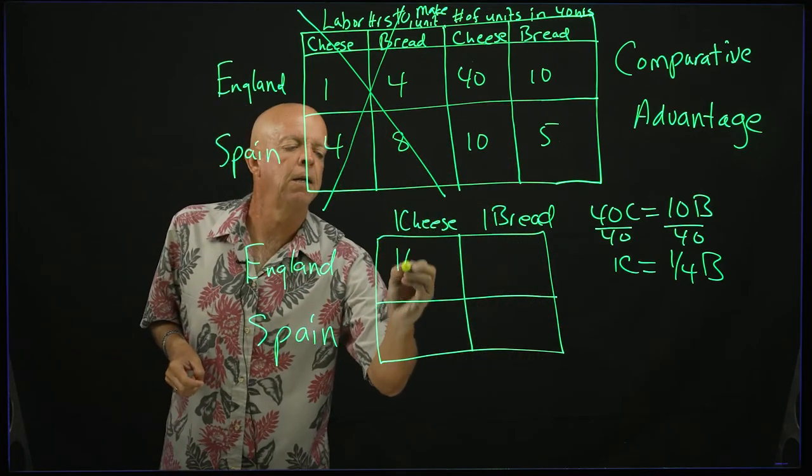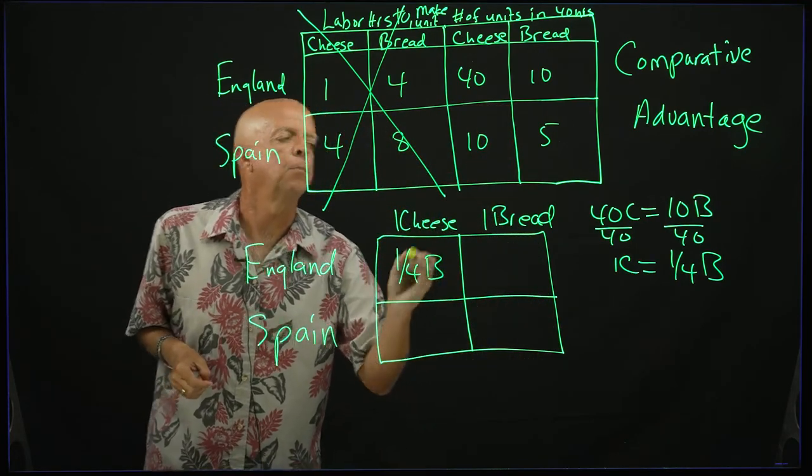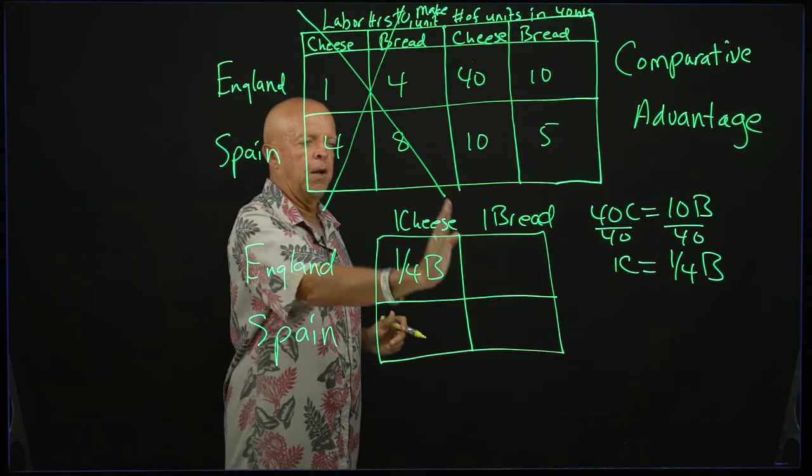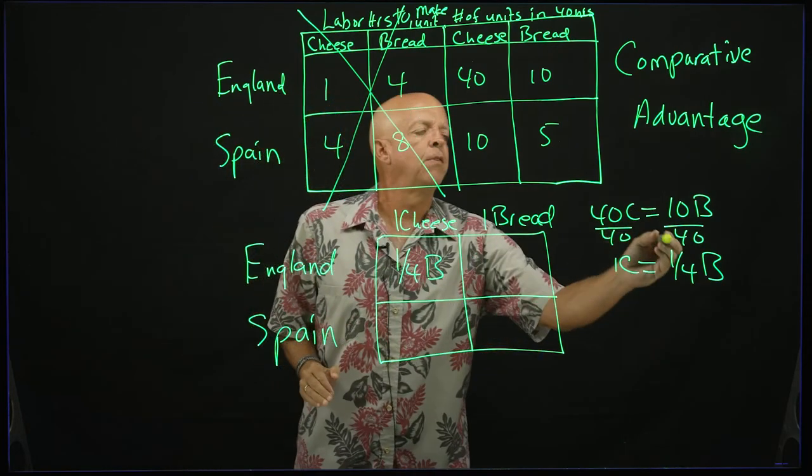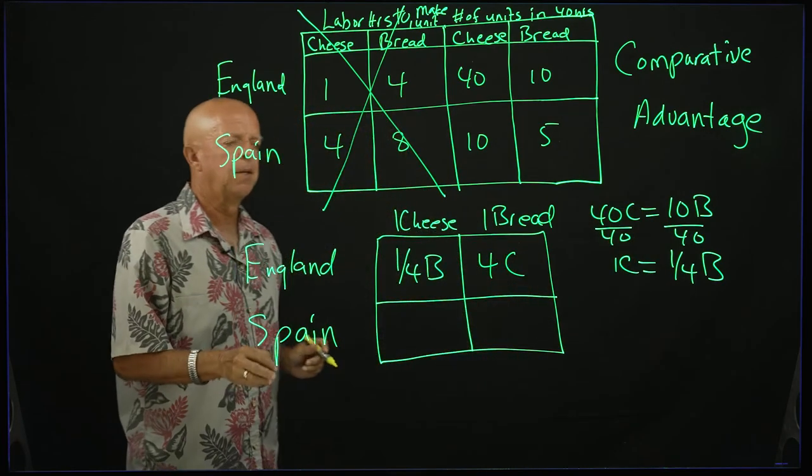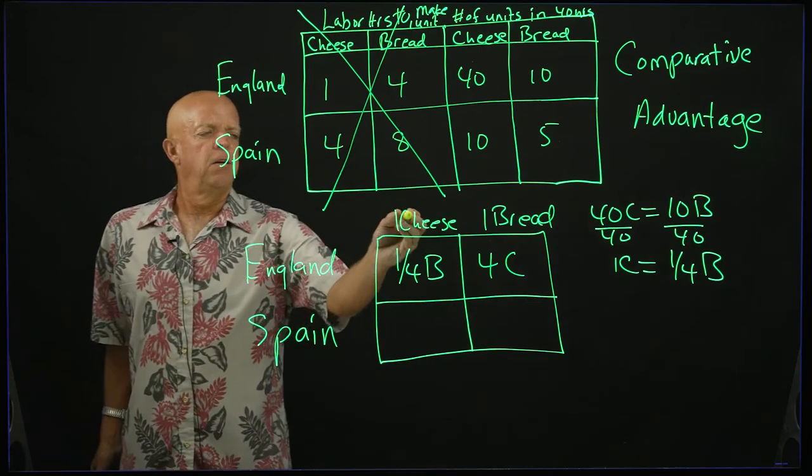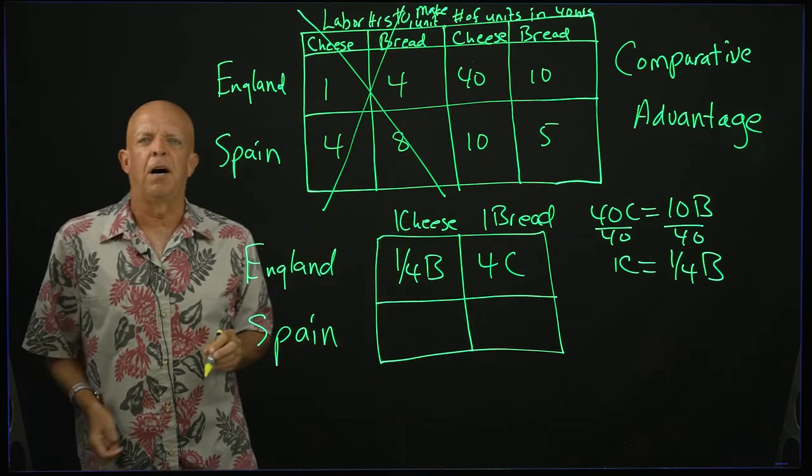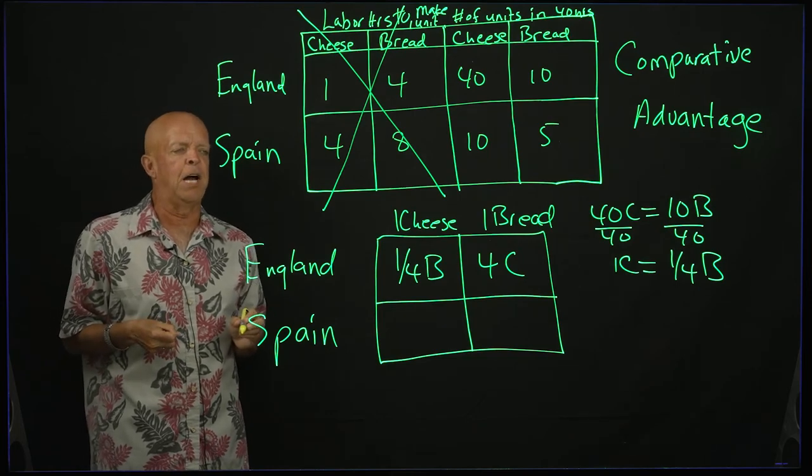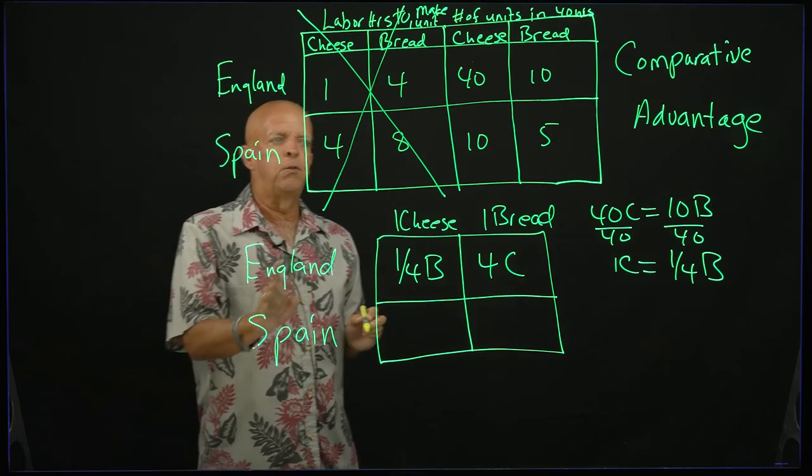And that 1/4b goes right here. And if you do it for bread, it will be divided by 10, divided by 10, and this becomes 4c. This number is going to be in terms of the other. So it's to produce one unit of cheese, how much bread are you going to have to give up? Now that's for England.